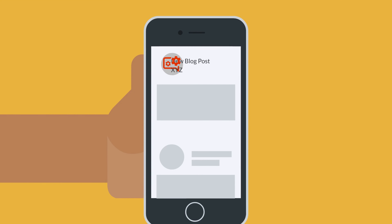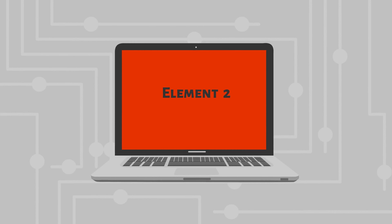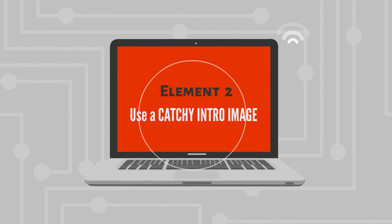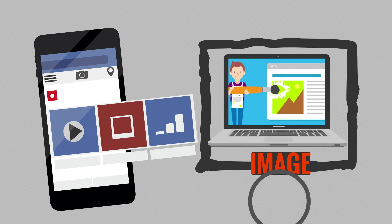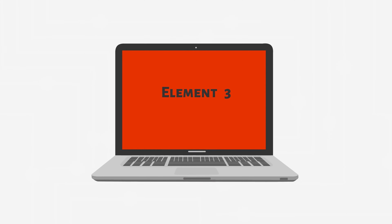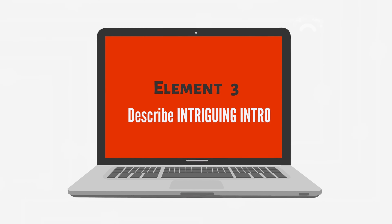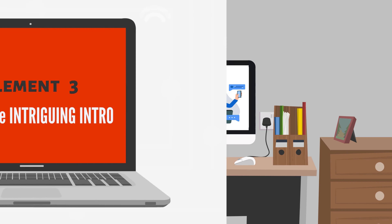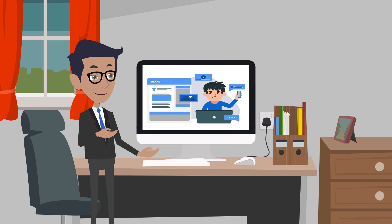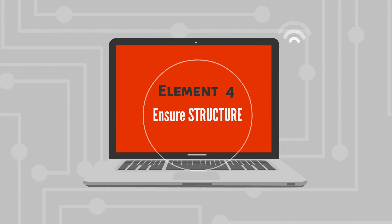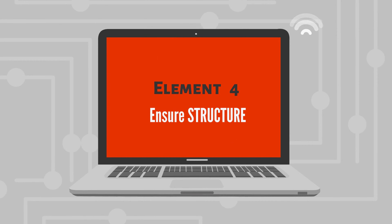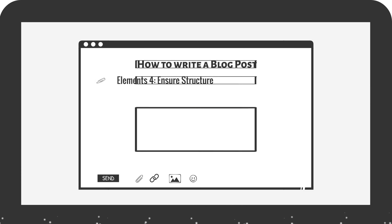For example, '10 proven steps to...' Element two: use a catchy intro image relevant to the content you want to share. Element three: describe an intriguing intro giving an overview of what it is about. Element four: ensure structure — use sub headlines for formulating thoughts the author wants to explain.